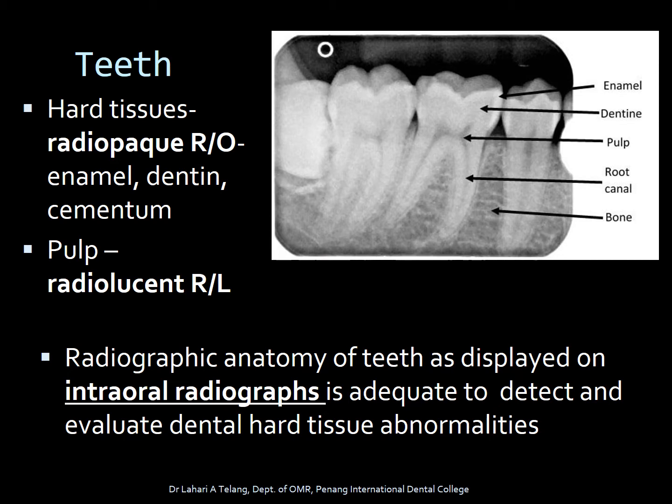The radiographic anatomy of teeth as displayed on intraoral radiographs is adequate to detect and evaluate dental hard tissue abnormalities. For the simplest forms of abnormalities like dental caries, the intraoral radiograph is more than enough to distinguish whether the patient has caries or not.